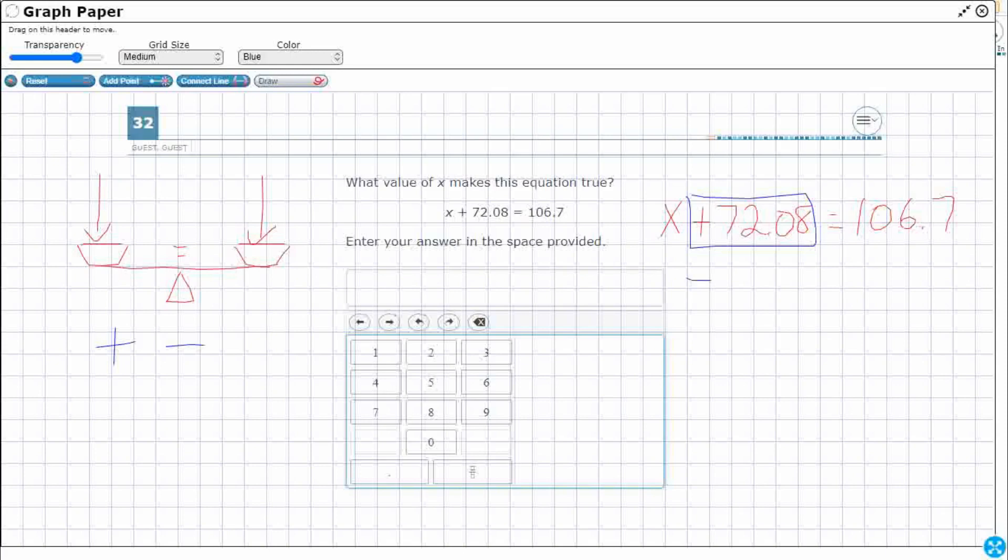So if I subtract 72.08, look what's going to happen. Plus 72.08 minus 72.08. That is going to cancel those out. That's going to leave my x by itself. But in order for me to do that, I need to keep that balance. I need to do the same thing on the other side of the equal sign. So if I subtract 72.08 from both sides, I'm going to have a balanced equation. That's going to leave my x all by itself.